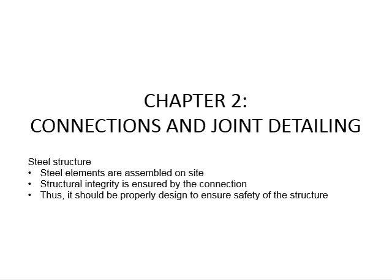Chapter 2: Connections and Joint Detailing. Steel structures is a type of industrialized building system. Each structural element, such as the beams and columns, are normally prefabricated in the factory before being transported to the site for installation.